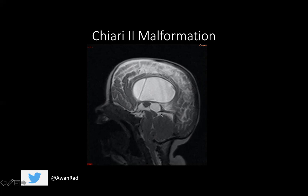Other secondary signs of Chiari 2 include beaking of the tectum, which is the dorsal part of the midbrain, and an enlarged massa intermedia, which is a bridge between the paired thalami across the midline of the third ventricle. So when you have an enlarged massa intermedia, tectal beaking, and herniation of both the cerebellum and the medulla, you're looking at a Chiari 2 malformation.